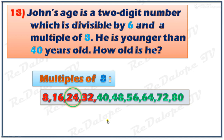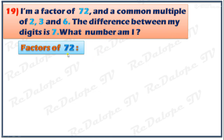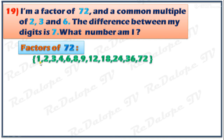I am a factor of 72 and a common multiple of 2, 3, and 6. The difference between my digits is 7. What number am I? The factors of 72 are: 1, 2, 3, 4, 6, 8, 9, 12, 18, 24, 36, and 72. The possible 2-digit number where the difference of digits is 7 is 18, since 8 minus 1 equals 7. The other candidates — 12, 24, 36, 72 — do not have a digit difference of exactly 7.